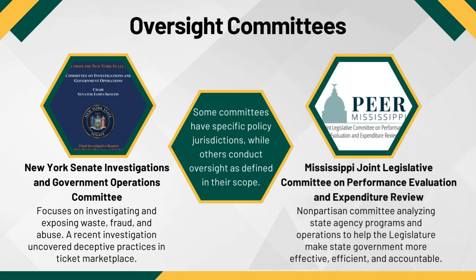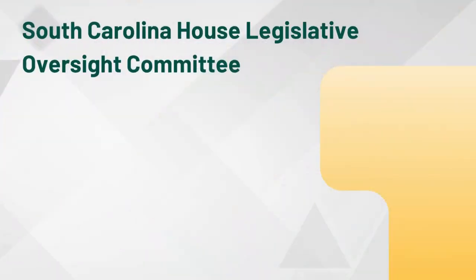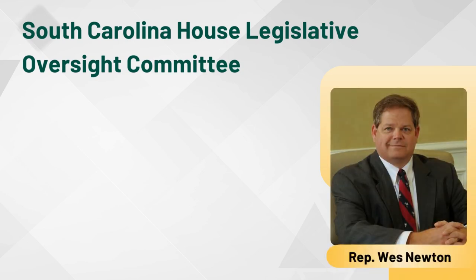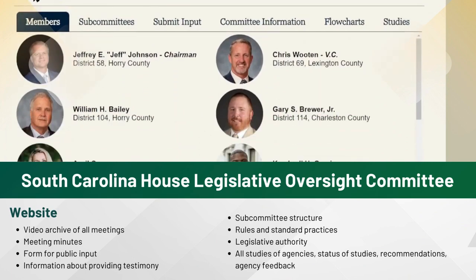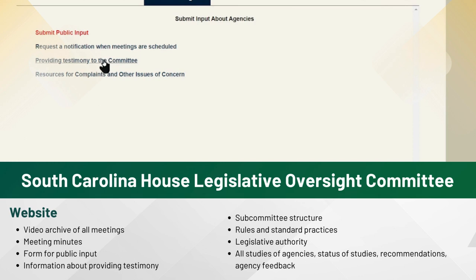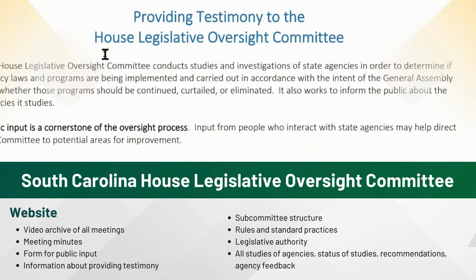In Mississippi, the Joint Legislative Committee on Performance Evaluation and Expenditure Review, or PEER, is a nonpartisan committee analyzing state agency programs and operations to help the legislature make state government more effective, more efficient, and more accountable. South Carolina's House Legislative Oversight Committee excels at several aspects of legislative oversight. Representative Wes Newton from South Carolina is a recipient of the Levin Center's Carl Levin Award for Effective Oversight, received for his work as the chair of this committee. This standing committee is comprised of 20 representatives — 70% Republican, comparable to the full House partisan makeup of 71.5%. The full committee met an average of 11 times per session over the last four sessions, while five subcommittees met more frequently. There is extensive information available on the committee's website, including a video archive of all meetings, a form for the public to submit input, and information about how to provide testimony.